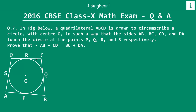In the figure below, a quadrilateral ABCD is drawn to circumscribe a circle with center O. Circumscribe means the quadrilateral is outside and the circle is inside, such that the sides AB, BC, CD, and DA touch the circle at points P, Q, R, and S respectively.